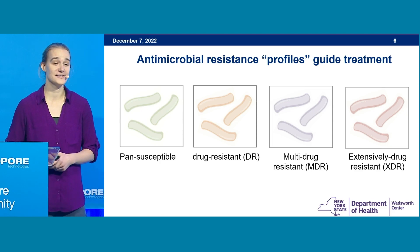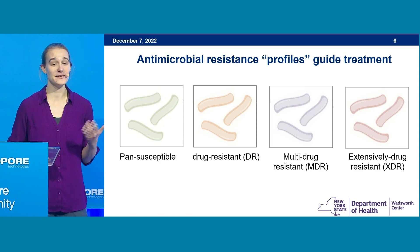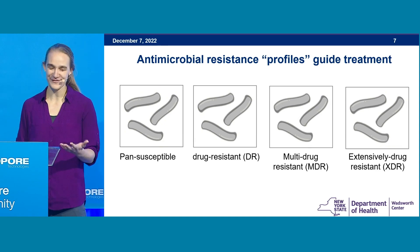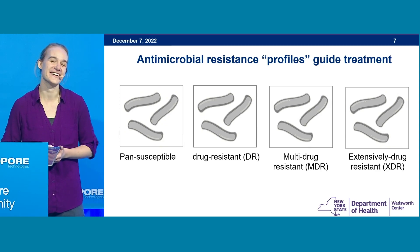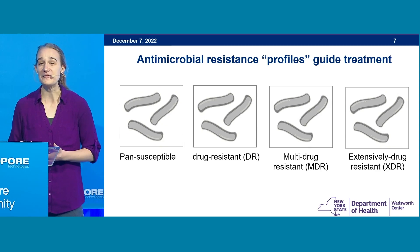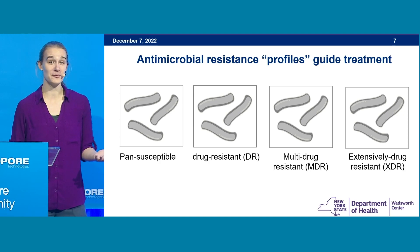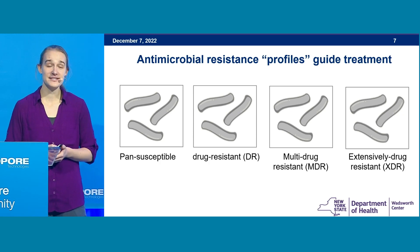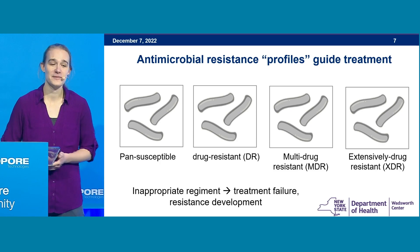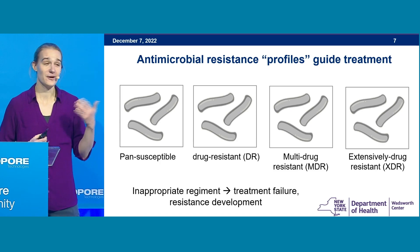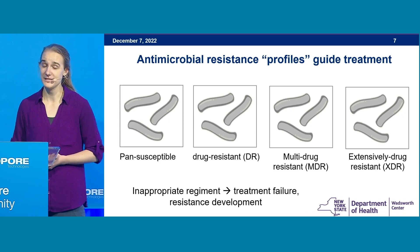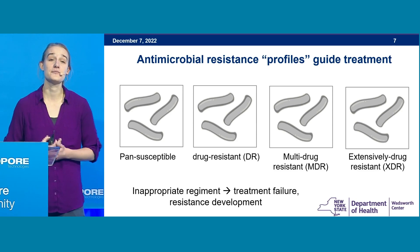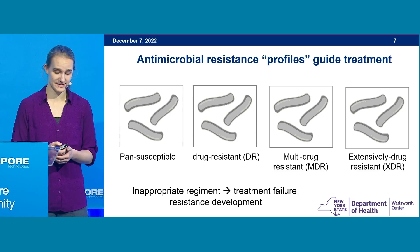It's critical to get patients on the right therapy as soon as possible. When they're first diagnosed with tuberculosis, healthcare providers have limited information about what type of TB they're trying to treat. When patients are on the wrong therapy, their TB is going to progress, their treatment might fail, and it can promote the development of further resistance.